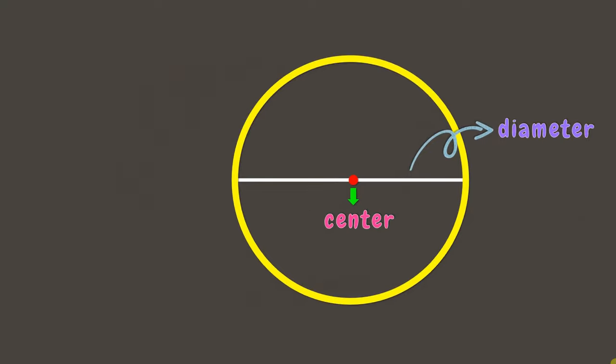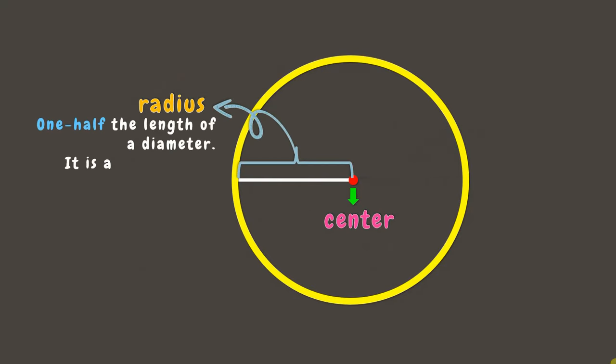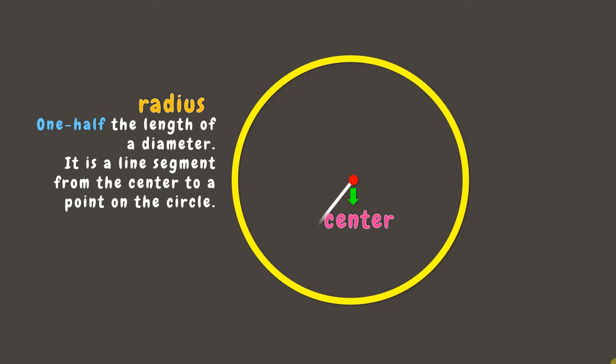Now, half of the diameter is what we call the radius. A radius is a line segment from the center to a point on the circle. A radius can be drawn like this, this, or this.